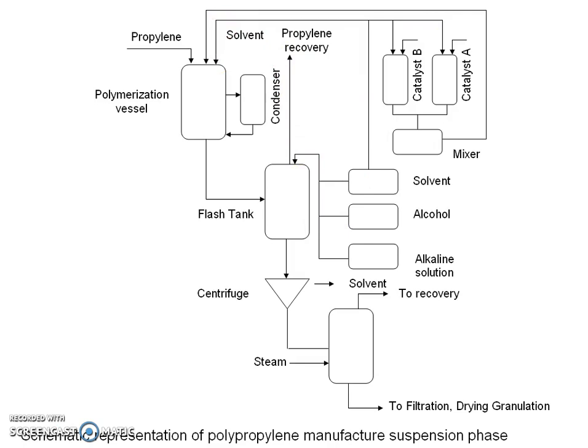The polypropylene polymer slurry flows to a flush tank where unreacted propylene is vaporized for recirculation into the reactor. The polymer slurry from the flush tank is then centrifuged to remove solvent. The polypropylene from the centrifuge is treated with anhydrous isopropanol to remove solvent and catalyst residues, and is then washed and dried.